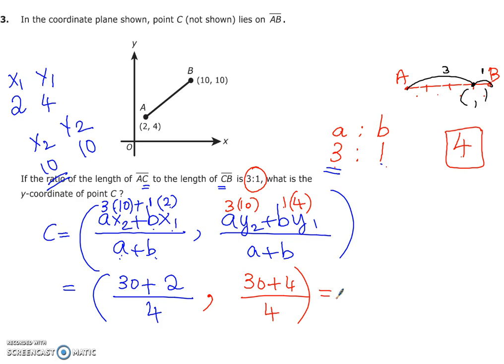So this final answer comes to be 30 plus 2 is 32, and 32 divided by 4 is 8. 30 plus 4 is 34 and 34 divided by 4, put it as a decimal, you get 8.5. So those are the coordinates of the new point, which actually divides this line segment into the given ratio.